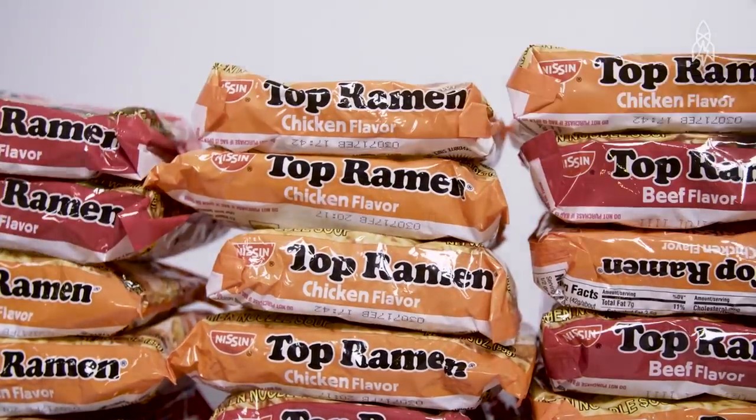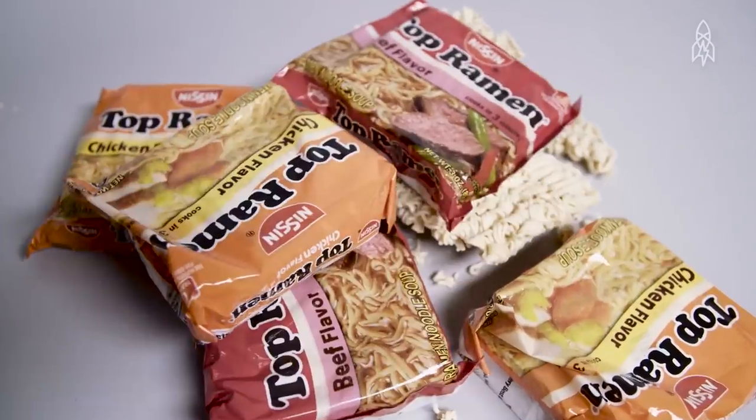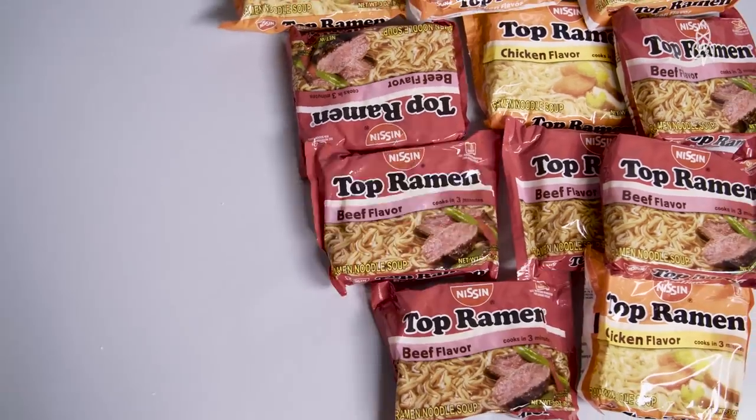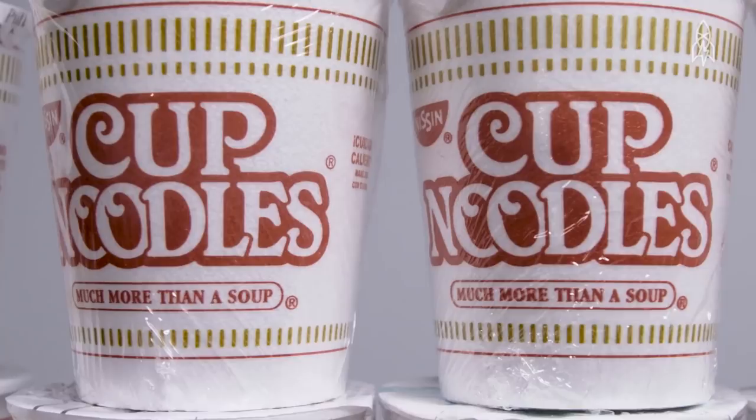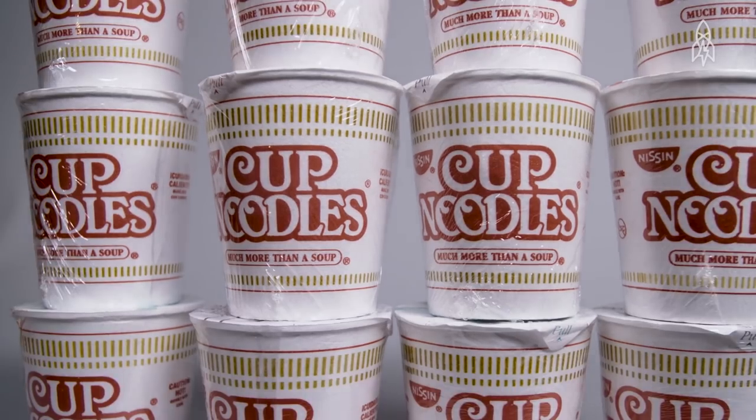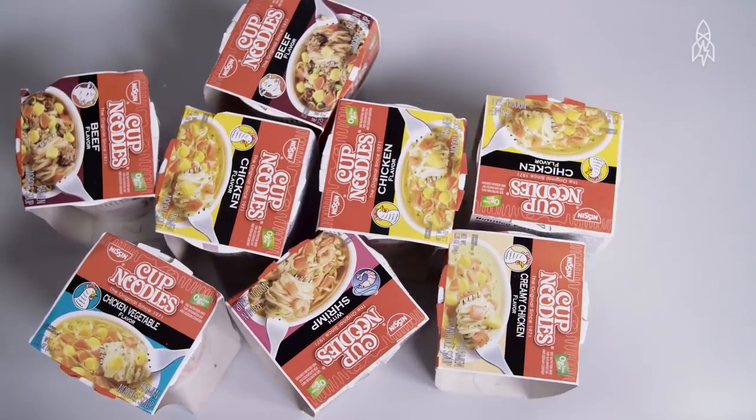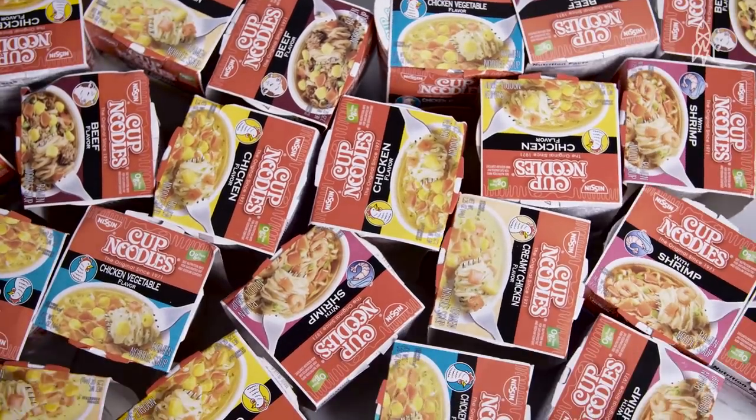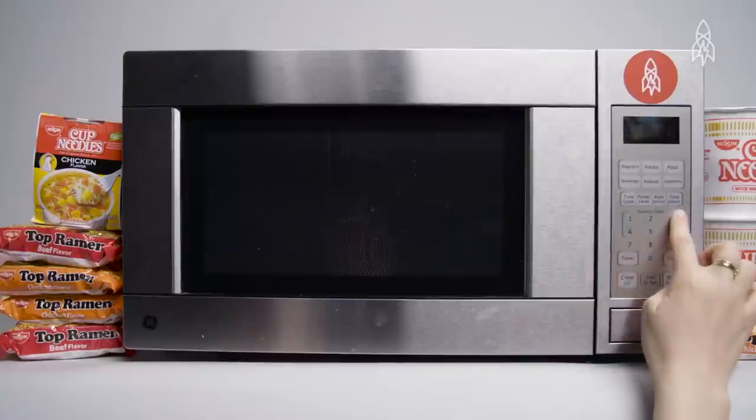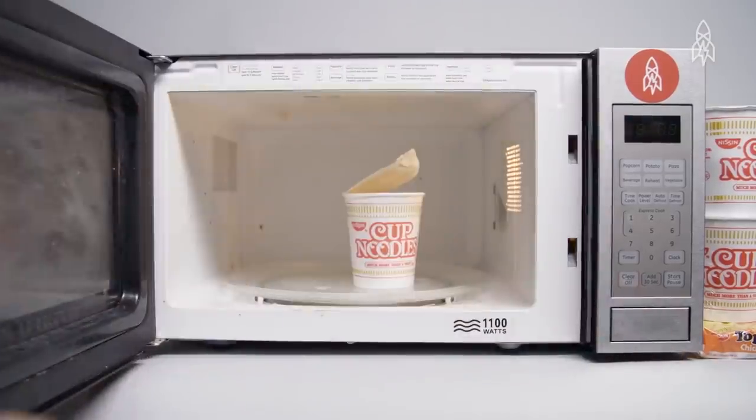And there you have it. Instant ramen noodles became an instant success. Ando's products gained notoriety when he introduced the packaged ramen in the 1950s, and later cup noodles in 1978. His company began selling upwards of 40 billion units every year and Momofuku Ando became a culinary icon in Japan. So the next time you heat up a cup of instant noodles, remember you're slurping down a little piece of history.